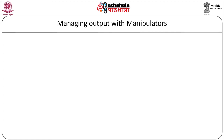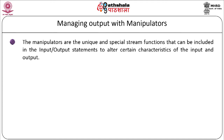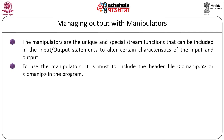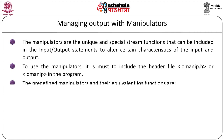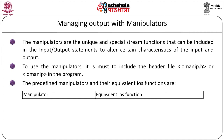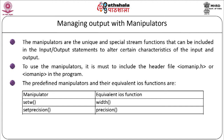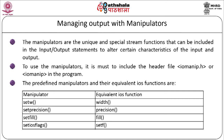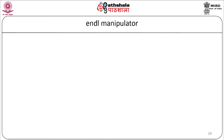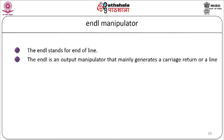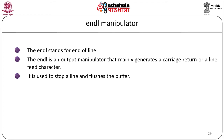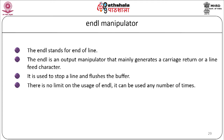Managing output with manipulators. Manipulators are unique stream functions that can be included in input and output statements to alter certain characteristics of I/O. To use manipulators, you must include the header file iomanip or iomanip.h. The predefined manipulators and their equivalent IOS functions are: setw ↔ width, setprecision ↔ precision, setfill ↔ fill, setiosflags ↔ setf, resetiosflags ↔ unsetf. The endl manipulator stands for end of line — it generates a carriage return or line feed character, stops a line, and flushes the buffer. It can be used any number of times.